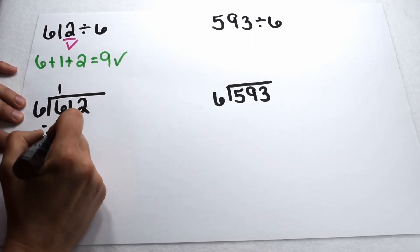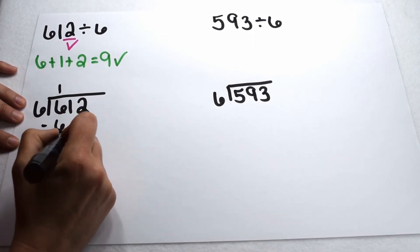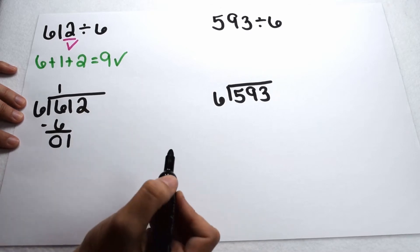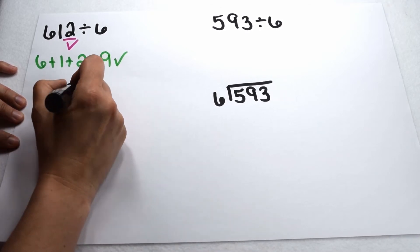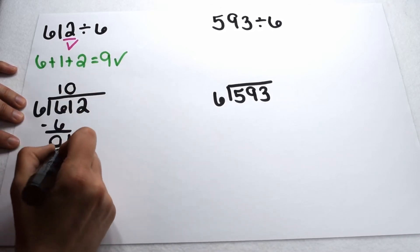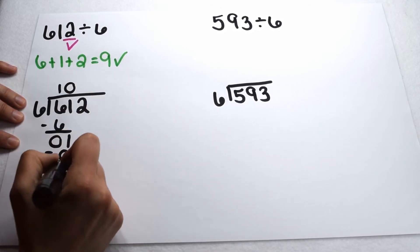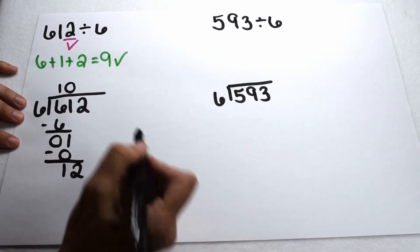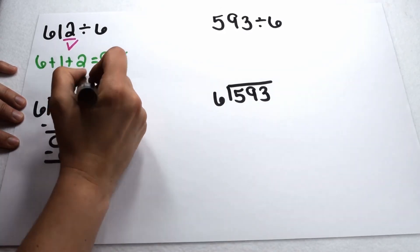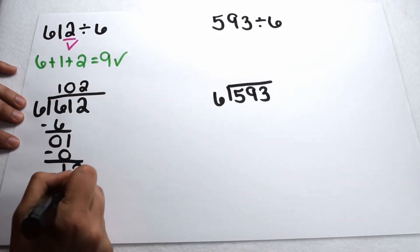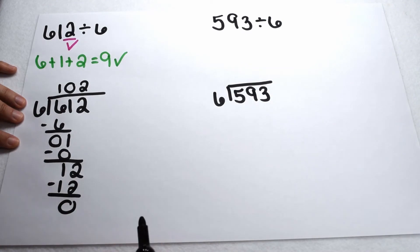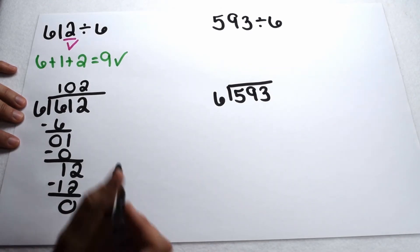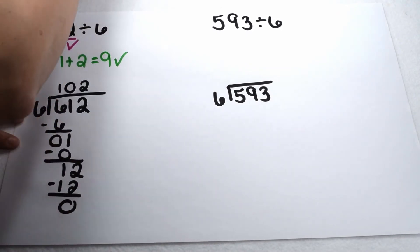Six goes into six one time; subtract out my six, there's zero, bring down my one. Six doesn't go into one, so we put zero up in our quotient and keep dividing. Bring down my two — six goes into twelve twice, and when we subtract that, we see we have no remainders. So 612 divided by six is 102.